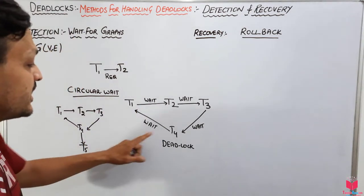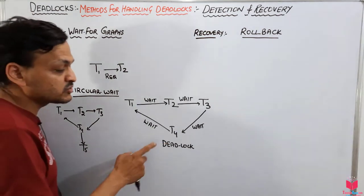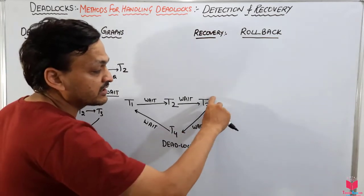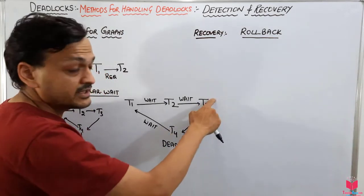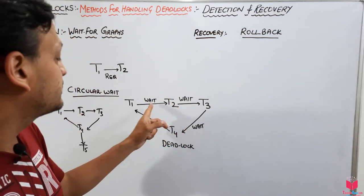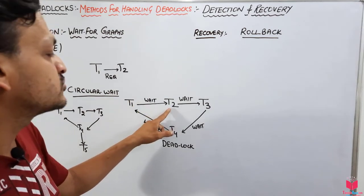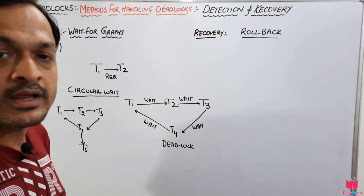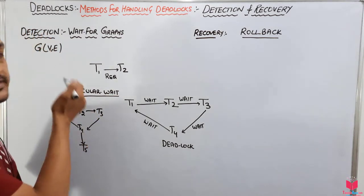After removing that edge, T1 releases its resources. These resources are given to T4; when T4 completes its work, it releases resources to T3; T3 then releases to T2; and T2 releases to T1, so T1 can finally start its work and get the resources it needs from T2.